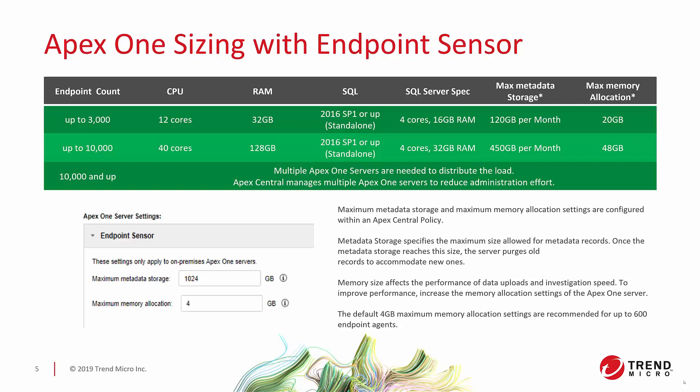There are a couple of settings that really affect Endpoint Sensor performance. Max memory allocation is on the server side — it's how much memory is allocated for processing specific events. Max metadata storage is the database size for containing the metadata cache. You have options to increase these to a maximum limit, and your metadata storage selection will heavily affect how much space you need on the SQL Server. For up to 10,000 agents, you're looking at 40 cores and 128 GB of RAM on the Apex One server, and 4 cores and 32 GB of RAM on the SQL. At 10,000 and above, you'll need to split across multiple Apex One servers for proper distribution of processing.